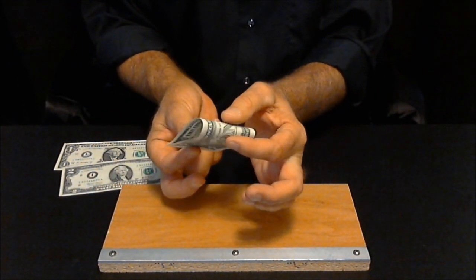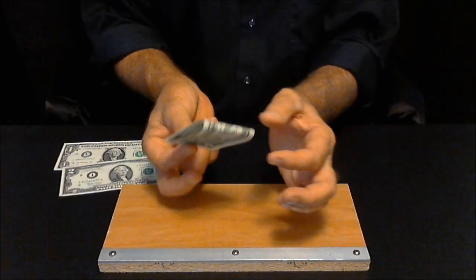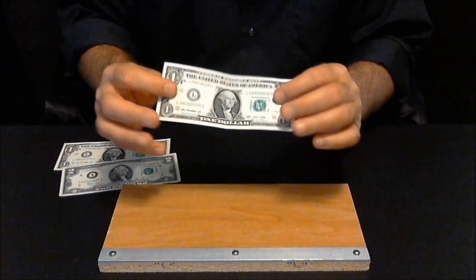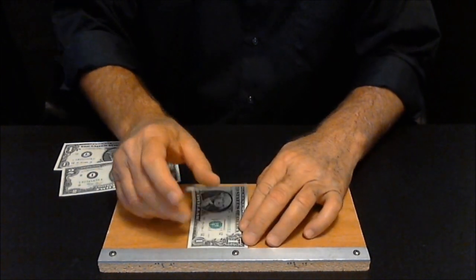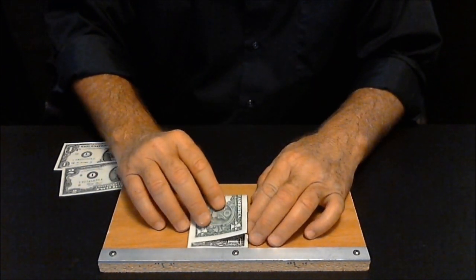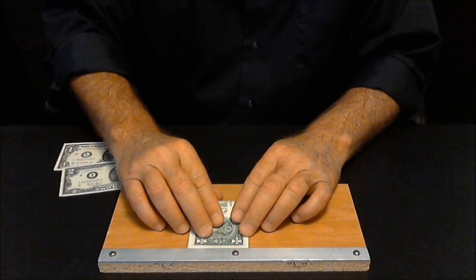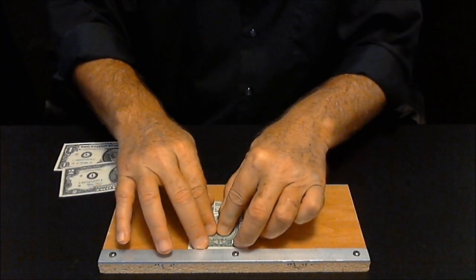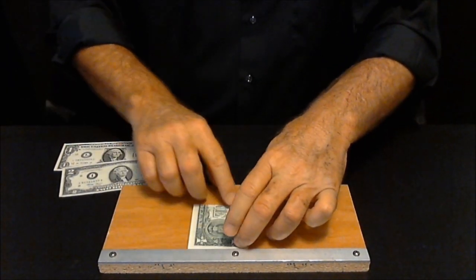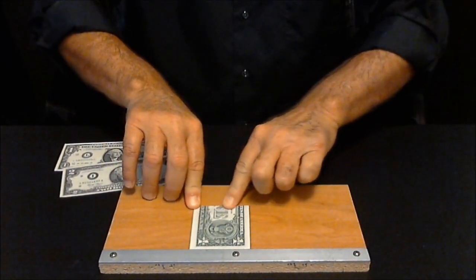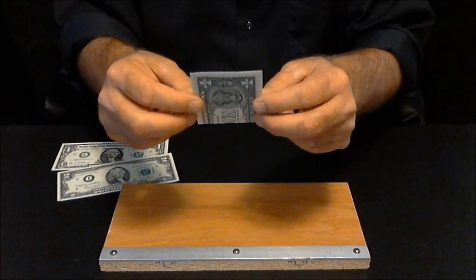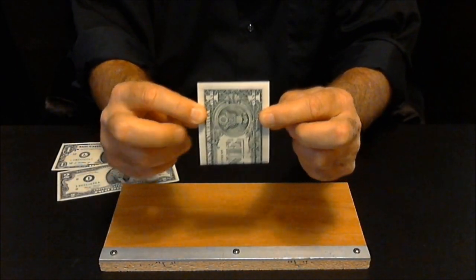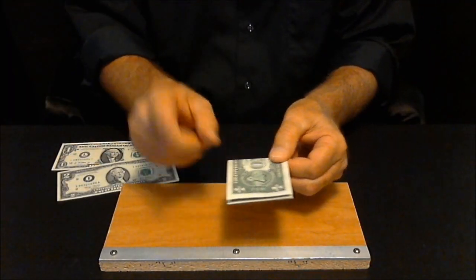You want to get that crease as close and perfect as you possibly can. So position your bill once you have the orientation of your fold. Get it lined up as close as you can and get that crease right on the bill. So when you hold it up, you can see that the corners perfectly line up. This is the first fold on one bill.